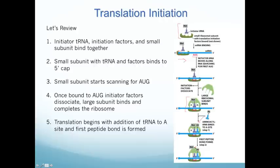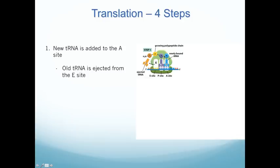That's translation initiation. For these step-wise processes, I recommend making flashcards — write step one, step two, step three on one side and what each step is on the other, then jumble them and try to put them in order. Initiation is actually more complicated than the elongation process itself, because once translation has started, it's a pretty straightforward repeating cycle.